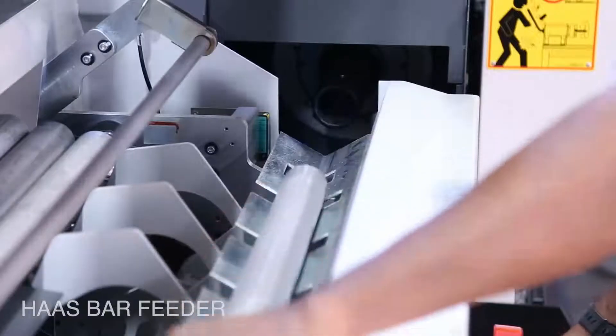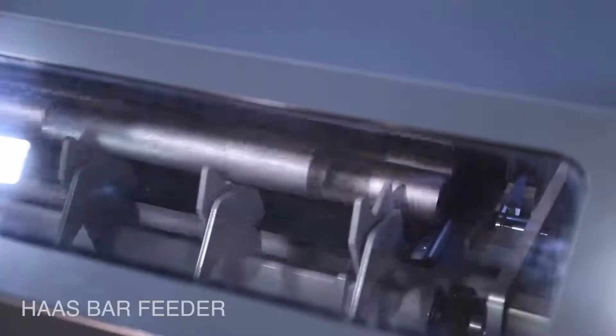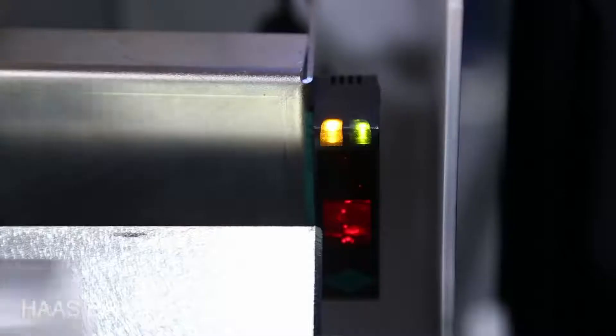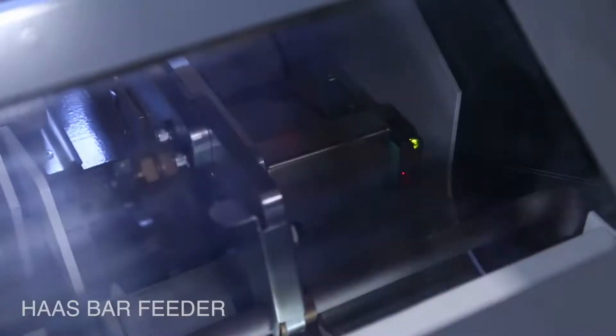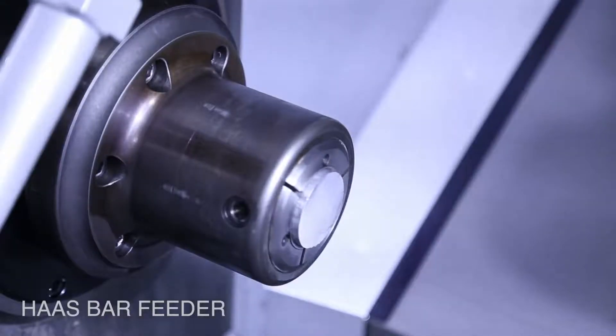The bar feeder's optical sensor means that you can load random length bars into the tray. No need to worry if they're all the same length. Stainless steel runners guide your stock into the loading tray.